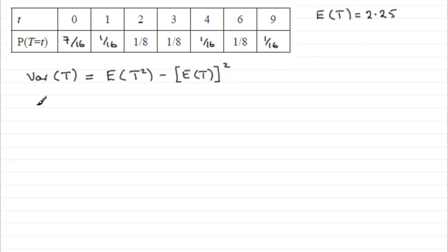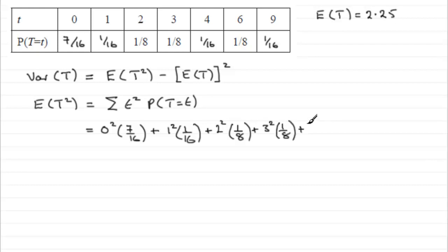We just need to work out e of t squared. And e of t squared is worked out by doing the sum of all your observed values squared, so t squared, and each one of those t squared is multiplied by the probability that t equals that corresponding value of t. In other words, another tedious calculation to work out, but what we've got to do is nought squared multiplied by its probability, 7 sixteenths, and then add it to much the same kind of thing here. One squared multiplied by 1 sixteenth plus, and then just carrying on writing that out, two squared times one-eighth plus three squared times one-eighth plus four squared times one-sixteenth.